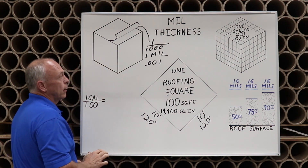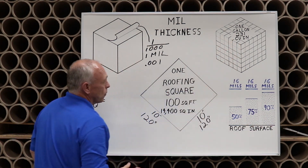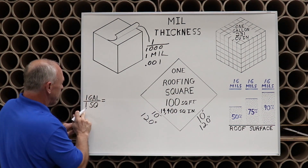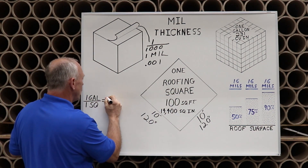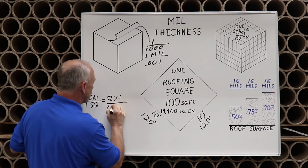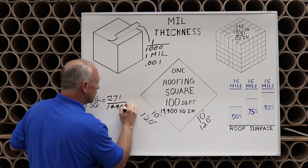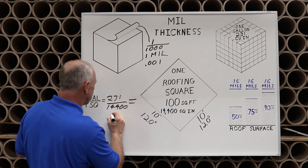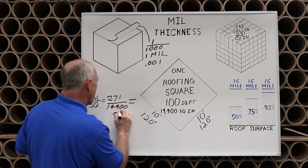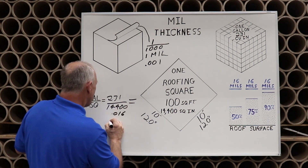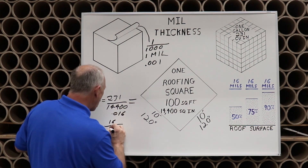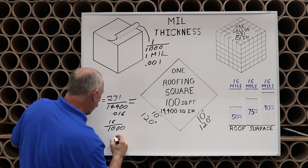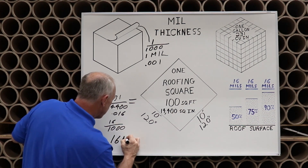Number four: we take 231 and divide it evenly over one square. That's one gallon per one square, or 231 divided by 14,400. Don't lose me here — it's pretty simple, because this comes to 0.016, or 16 thousandths. Remember we had one-thousandth up there — that's 16 mils.